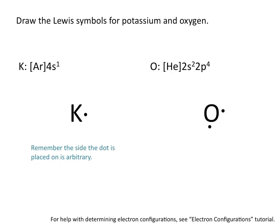We place oxygen's 6 valence electrons one at a time: 1, 2, 3, 4, 5, 6. And this is the Lewis symbol for oxygen.